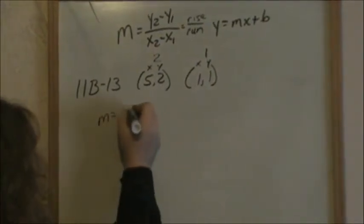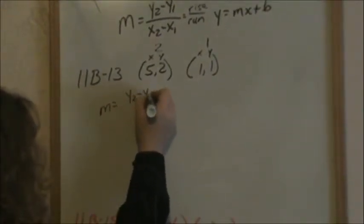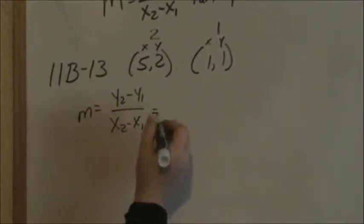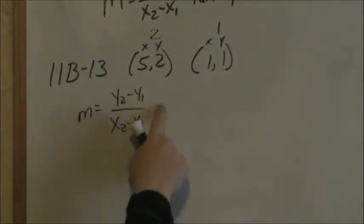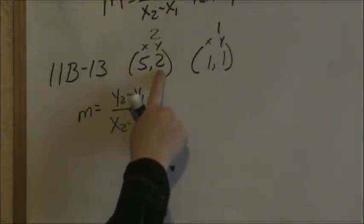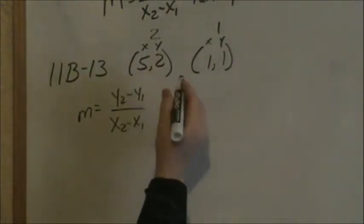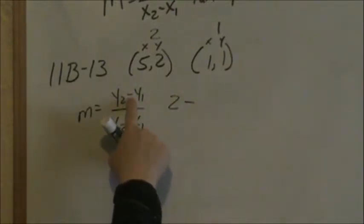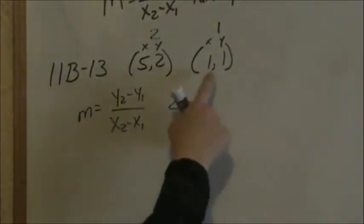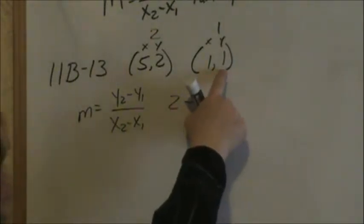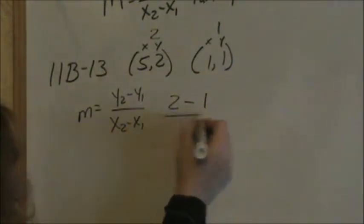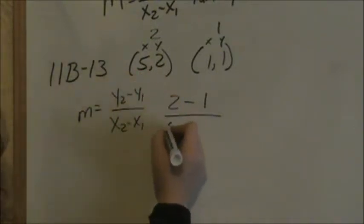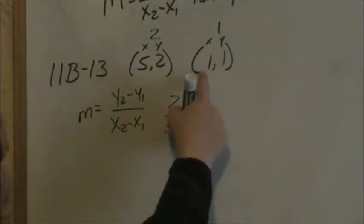So using that equation of y2 minus y1 over x2 minus x1, this is my y value for point 2, so that would be 2 minus, remember the formula is a subtraction sign there, this is my y value for point 1.